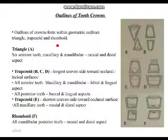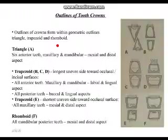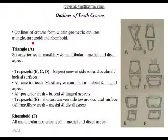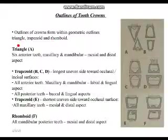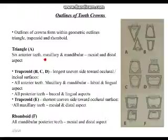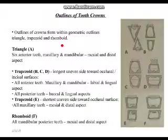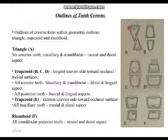Now, the outlines of tooth crowns: every tooth, from each surface — facial, lingual, or proximal (mesial or distal) — has a certain shape confined to geometric outlines. There are three shapes: triangle, trapezoid, and rhomboid. The triangular shape, as in figure A, is confined to the six anterior teeth — maxillary and mandibular — viewed from the mesial or distal (proximal) aspect.